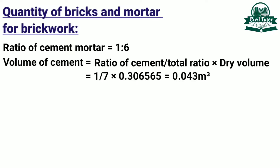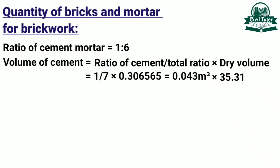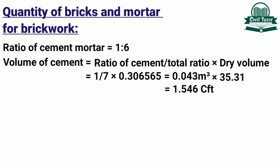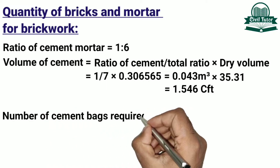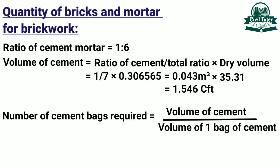Volume of cement in cubic feet will be calculated by multiplying the volume in m³ by 35.31. So finally we get the volume of cement in cubic feet equal to 1.546 cubic feet. Number of cement bags required will be equal to volume of cement divided by volume of 1 bag of cement, where the volume of 1 bag is 1.25 cubic feet. So the number of cement bags required will be 1.546 ÷ 1.25 = 1.23 bags.